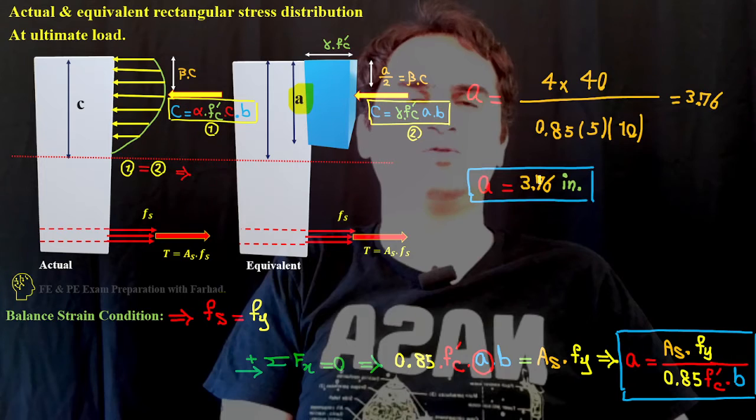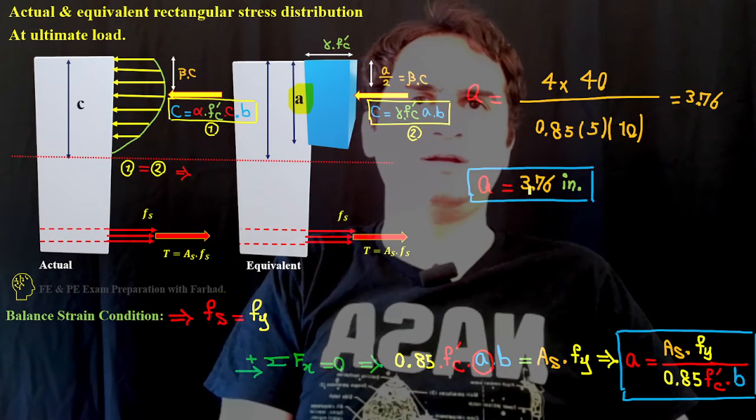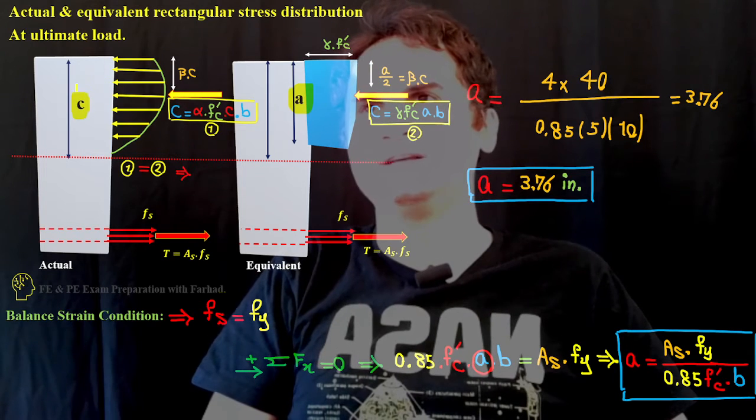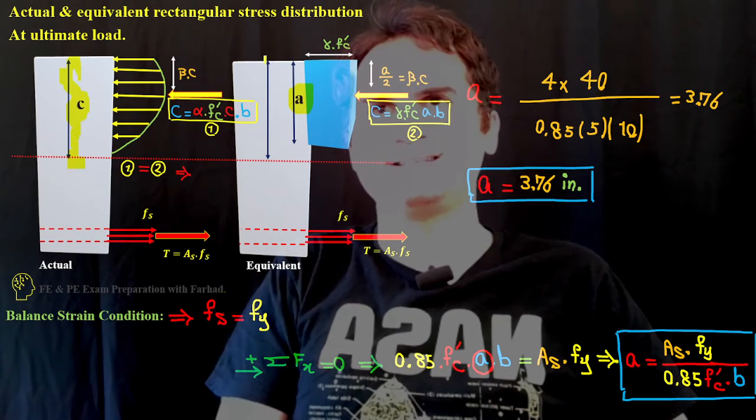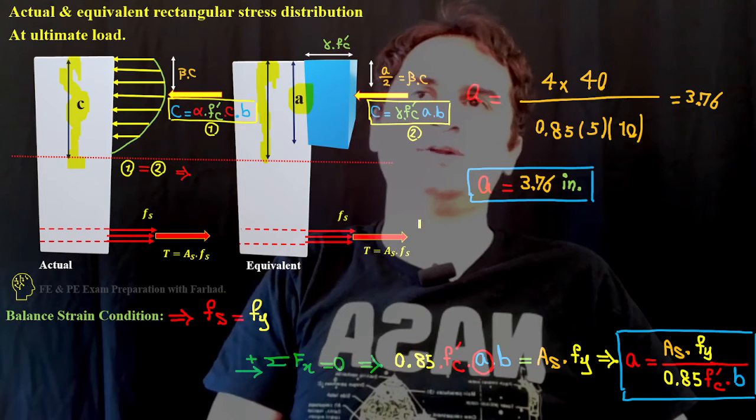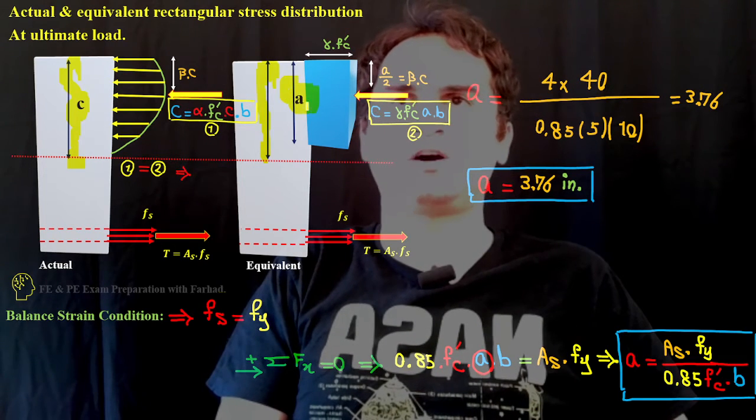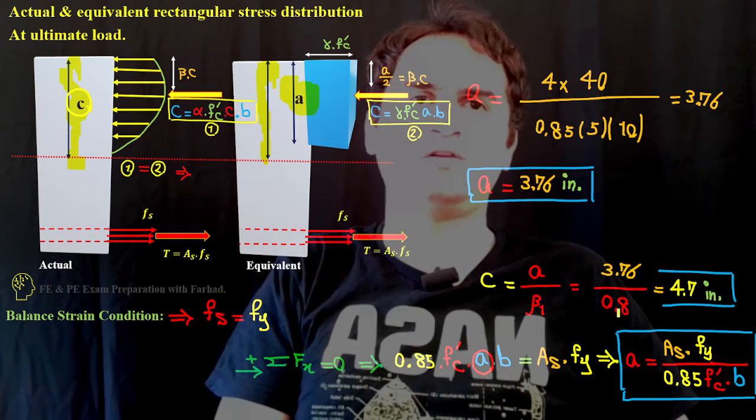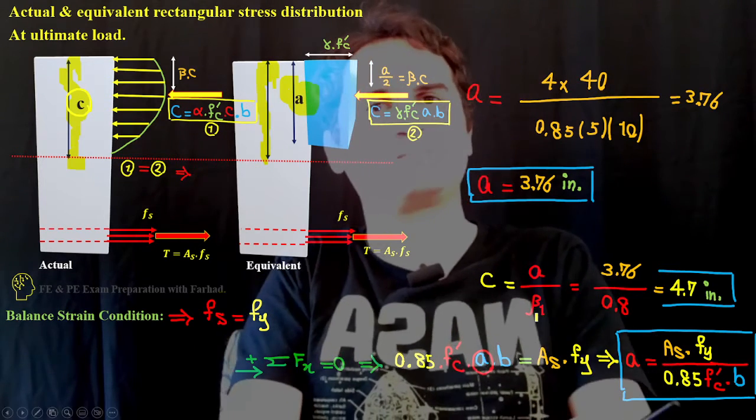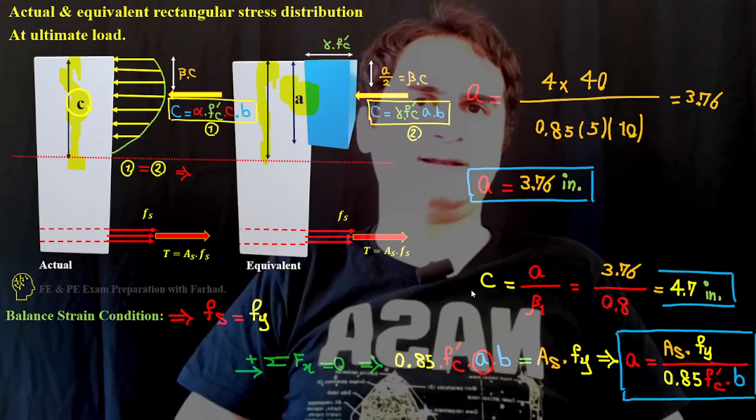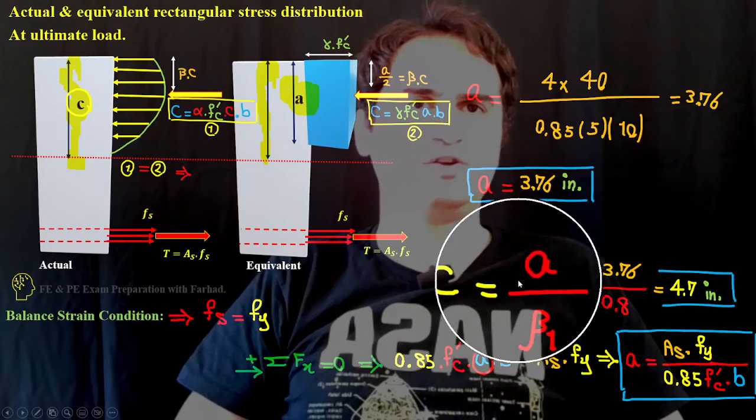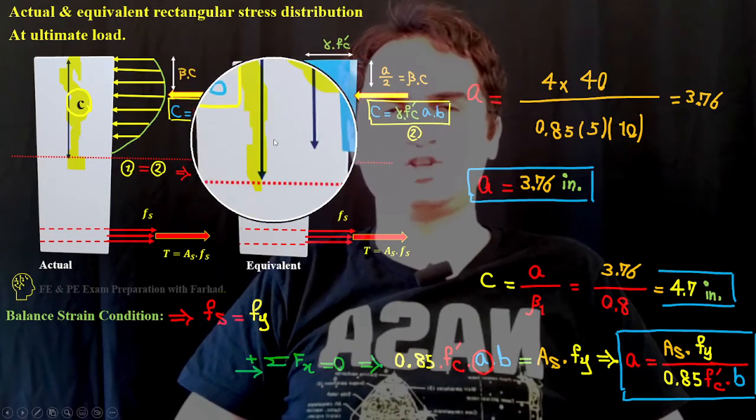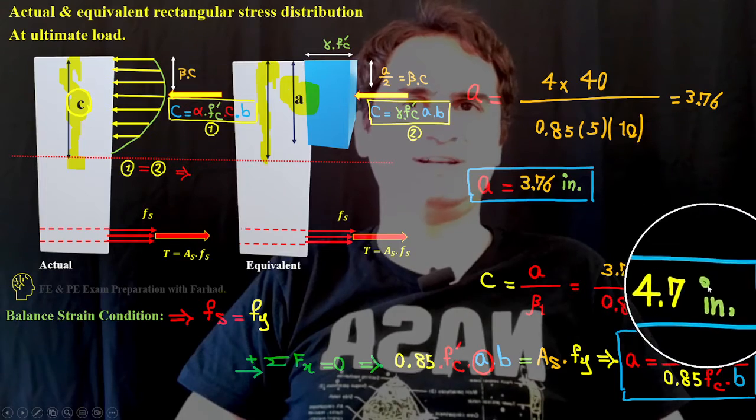Definitely c, distance to neutral axis, is a bit higher than a. The relation is c equals a over beta_1, which we already saw in the table, that's 0.8. This gives us the distance from the top of the section to neutral axis equal to 4.7 inches.